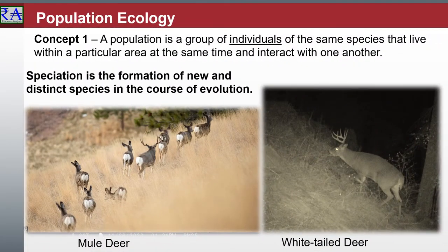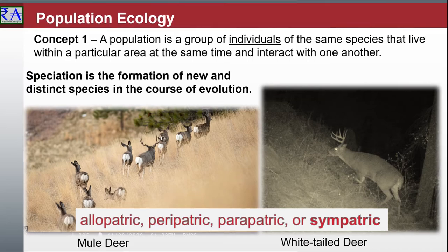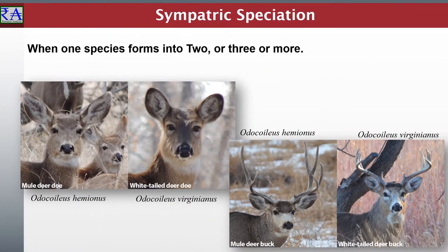Sympatric speciation is the evolution of a new species from a surviving ancestral species while both continue to inhabit overlapping geographic regions. In evolutionary biology and biogeography, sympatric and sympatry are terms referring to organisms whose ranges overlap so that they occur together at least in some places. This is the case with deer species in North America.